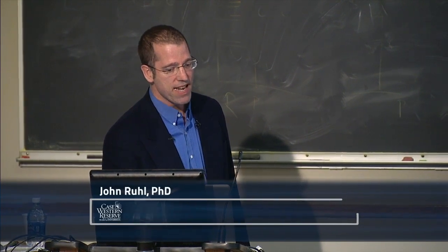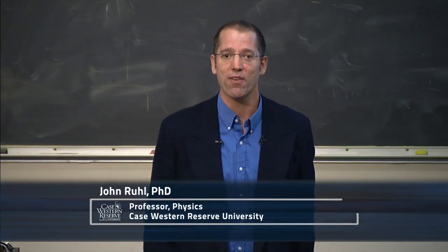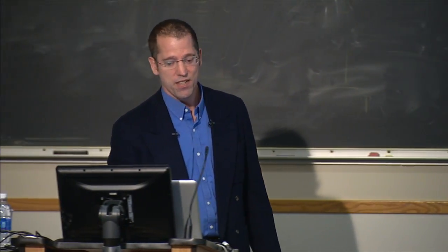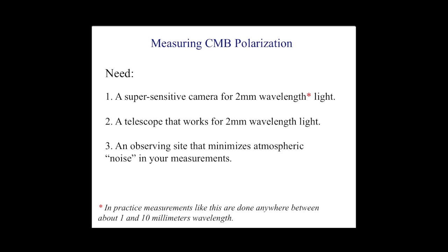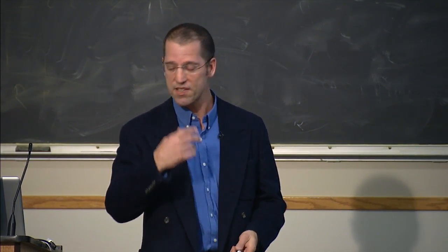To measure CMB polarization, you need three things: a super-sensitive camera for light at roughly two millimeters in wavelength where the microwave background is bright, a telescope that works for that kind of light, and you need to take it somewhere other than Cleveland. Cleveland is at sea level with a lot of atmosphere and humidity, which is very bad for our measurements.